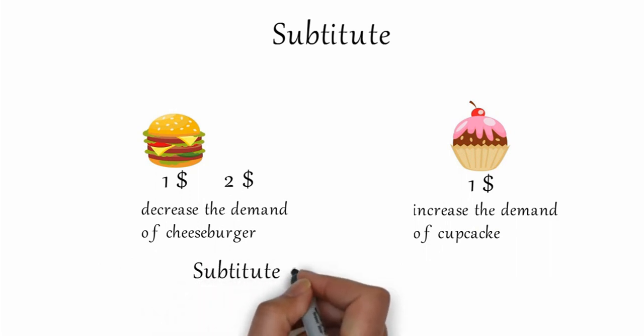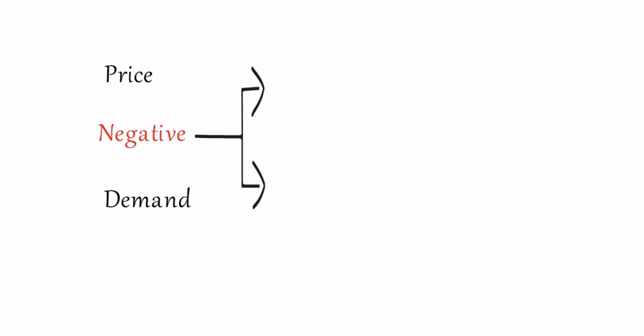So that means that price change creates a negative relationship between price and demand. So now you can understand what are the reasons for making a negative relationship between price and demand. That is income effect and substitution effect.